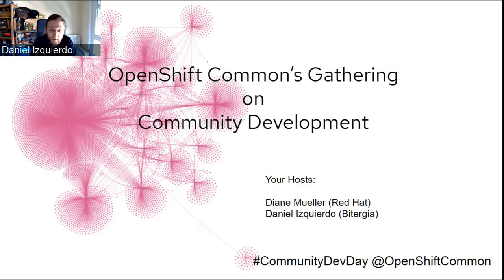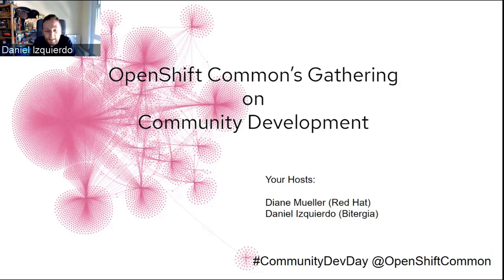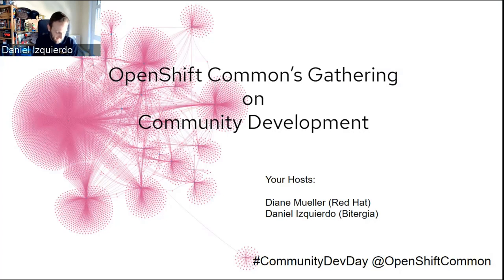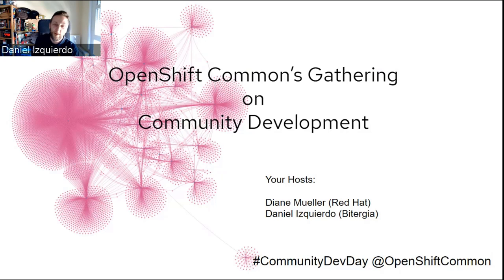A bit about me: I'm one of the founders of Vitergia. We started in 2012. We do software development analytics at scale, so we can analyze any projects that matter to you. What matters for today is the OpenShift and CNCF ecosystem. During the last couple of years, I've had the opportunity to join the CHAOSS project as well. The technology we're developing is open source Grimoire Lab. I'm a board member there, and I also serve as a member of the board of directors at the InnerSource Commons, which we'll discuss today as well.